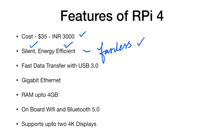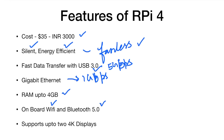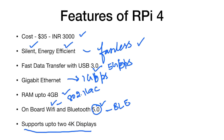Faster data transfer via USB 3.0 at 5 Gbps, and Gigabit Ethernet at 1 Gbps on the network. RAM goes up to 4 GB. It has onboard Wi-Fi and Bluetooth 5.0, also called BLE (Bluetooth Low Energy). Wi-Fi is 802.11ac, working on two different frequencies, and it supports up to two 4K displays.